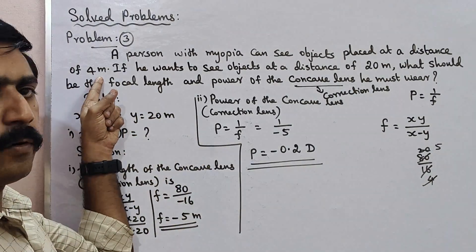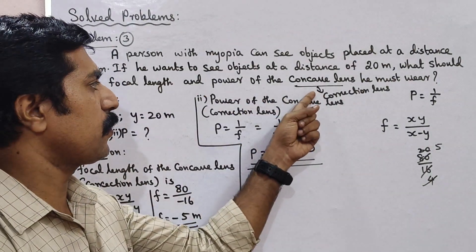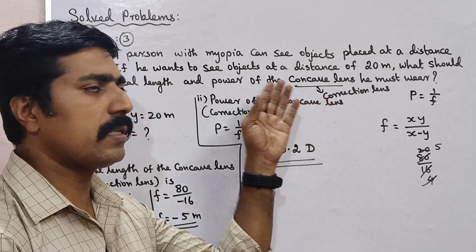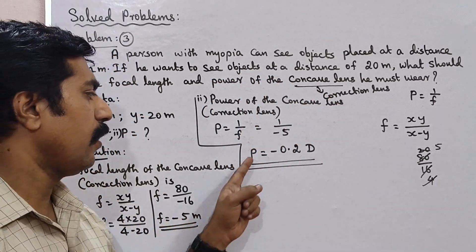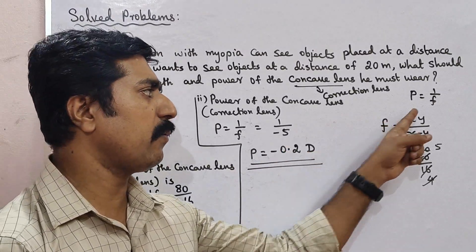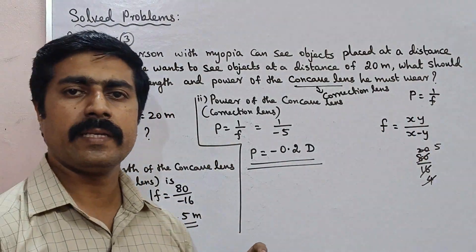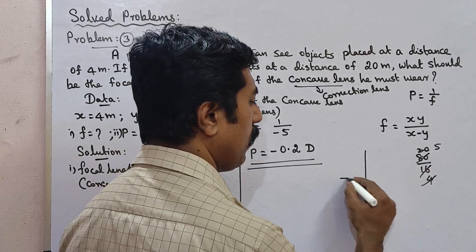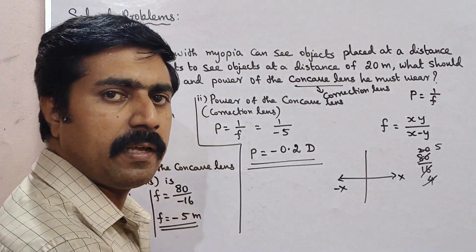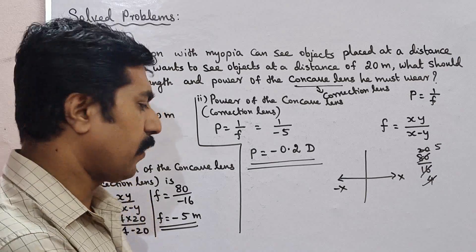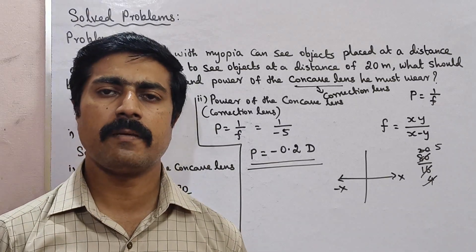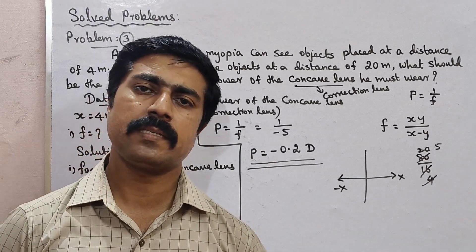So if you look at the object at 4 meters and use the correction concave lens, the distance becomes 20 meters. The focal length is minus 5 meters and the power of the lens is minus 0.2 diopter — both are negative. This follows the sign convention where values on the negative x-axis side are minus. Very simple problem — all the best, thank you.